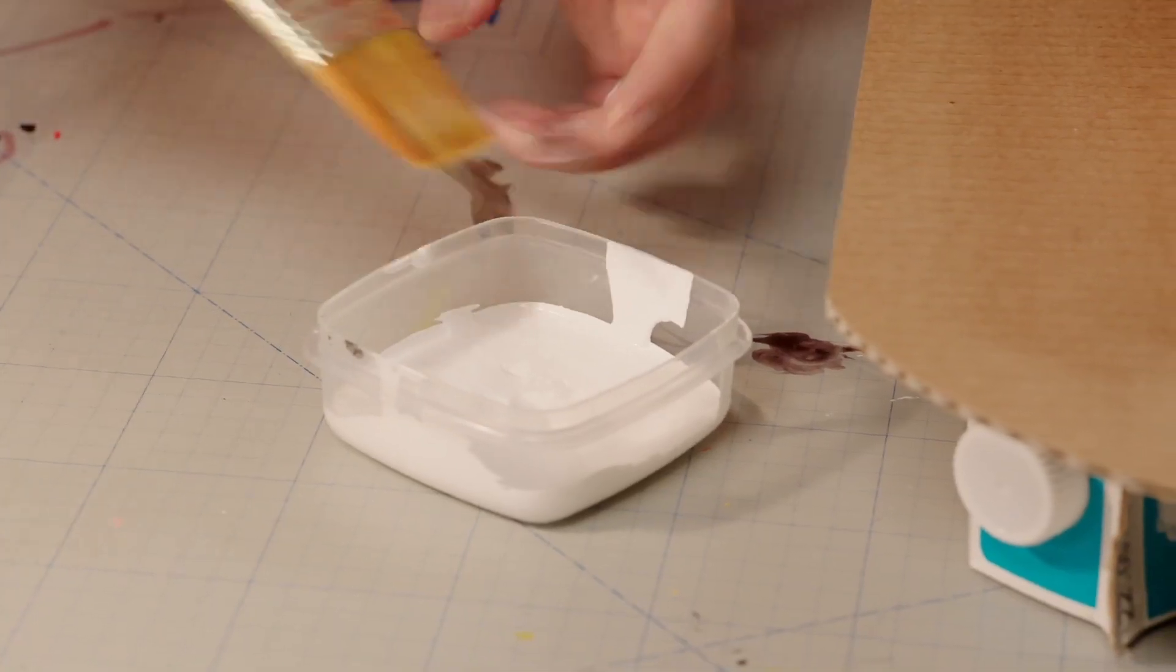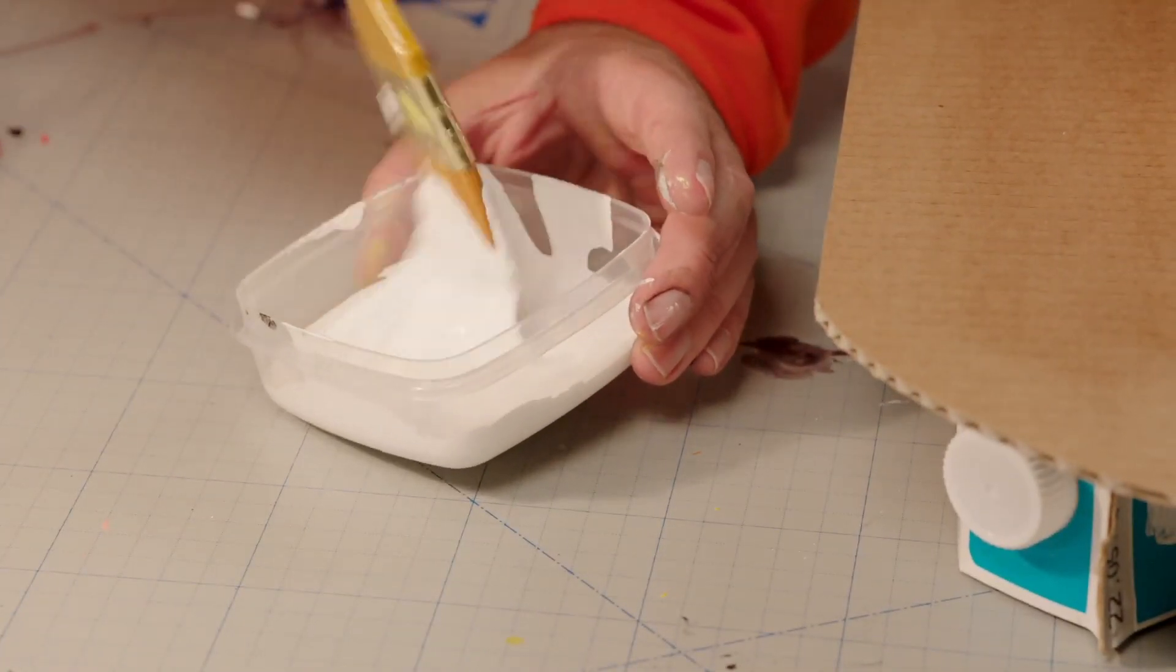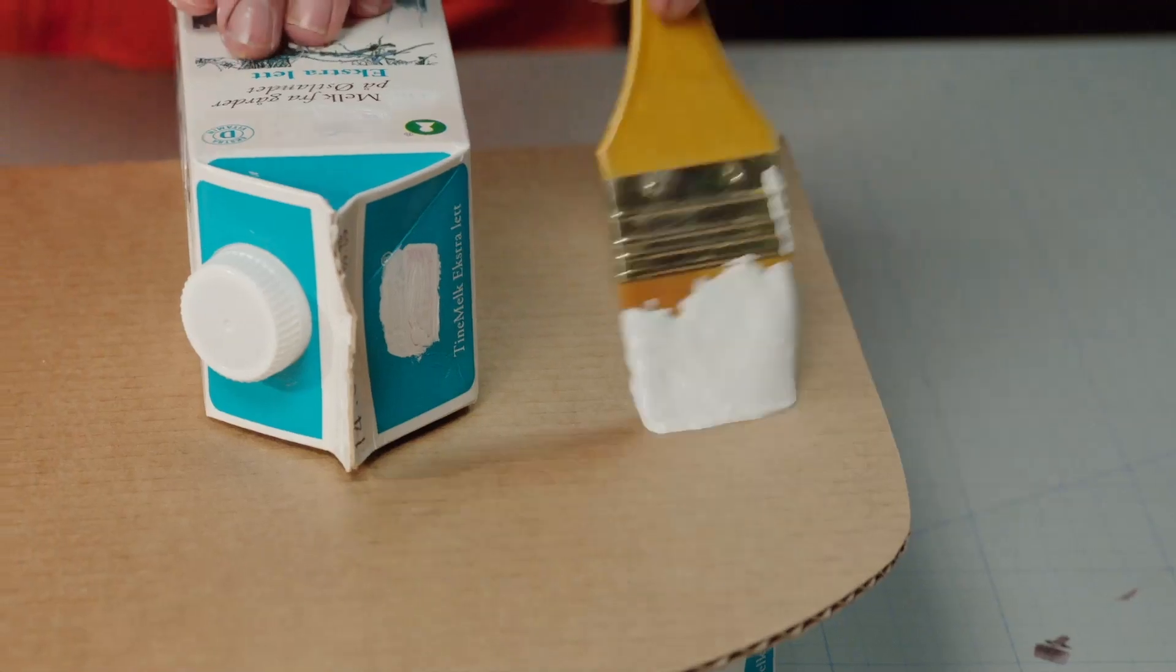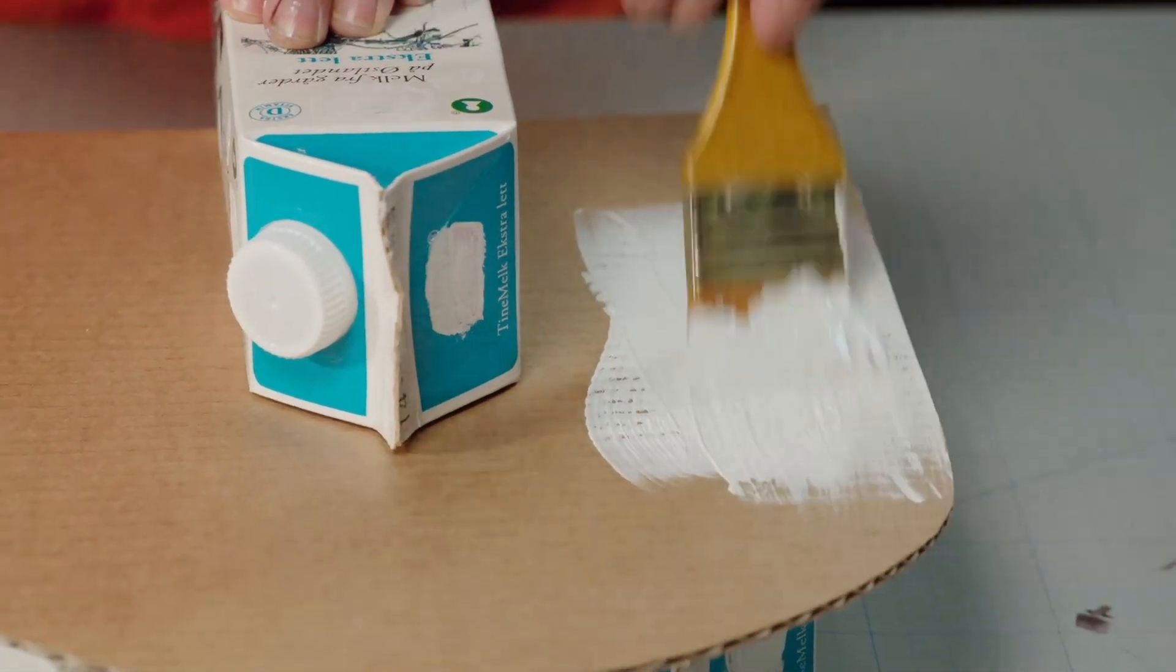Paint! Let's paint it up. I start with pure clean white. We're going to paint the whole thing white. Every inch. Make sure the glue is dry before you start painting.